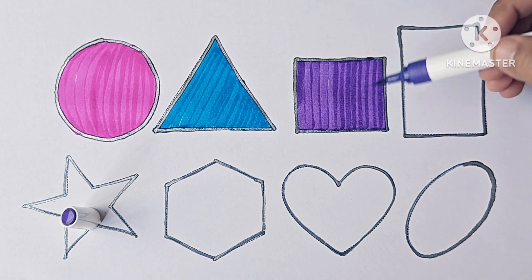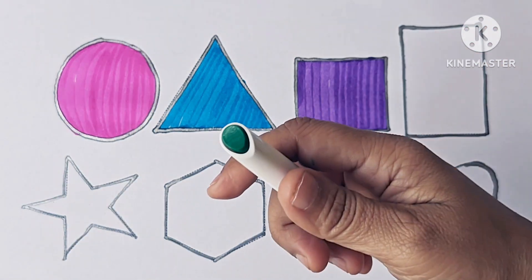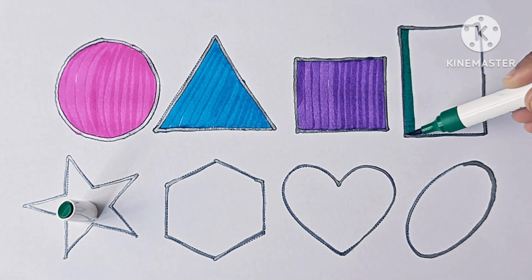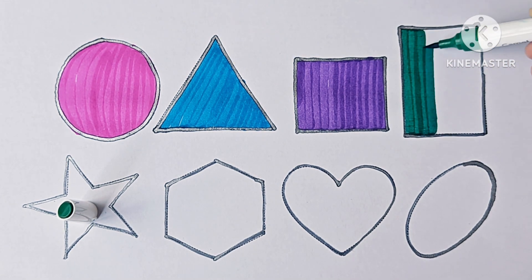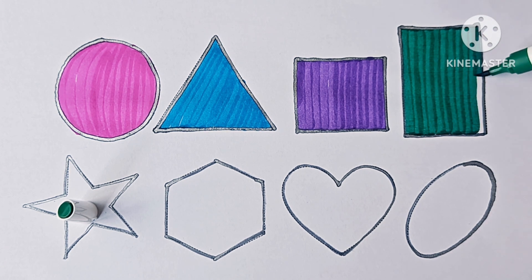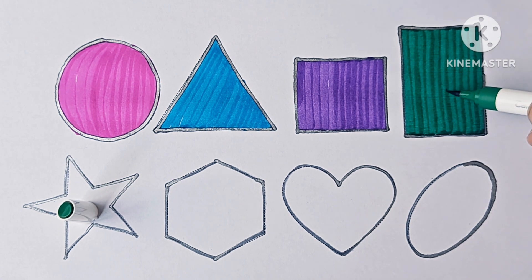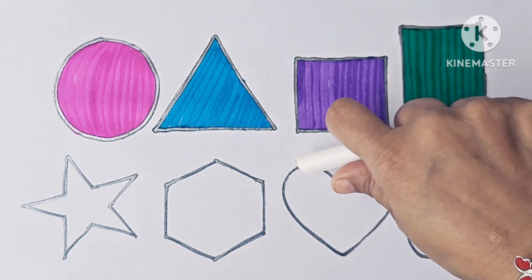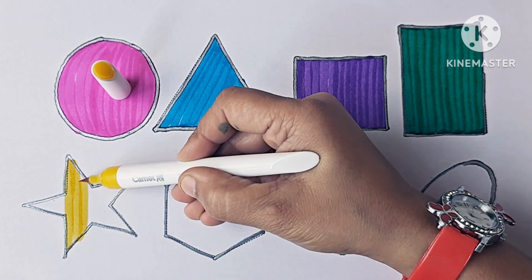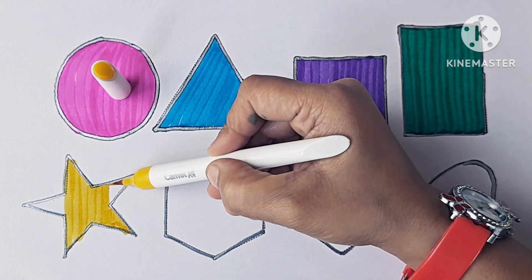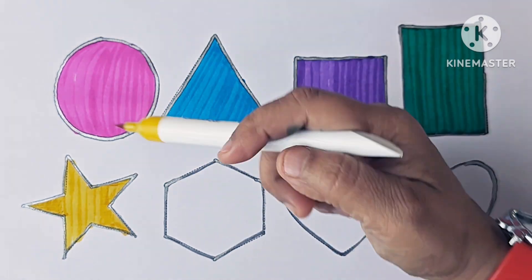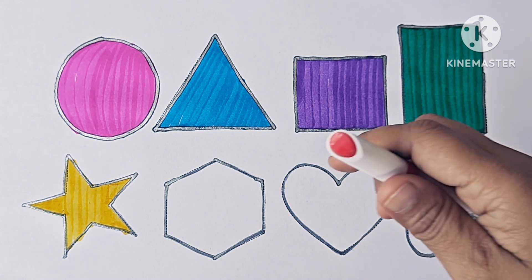This is square. This is green color. Rectangle. Yellow color. This is star. This is red color.